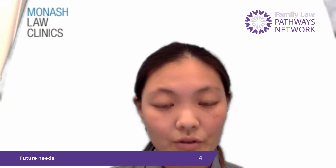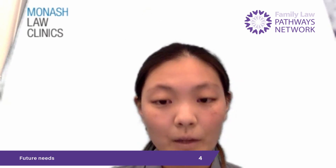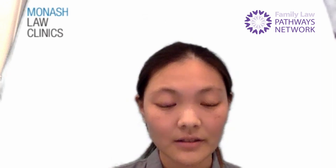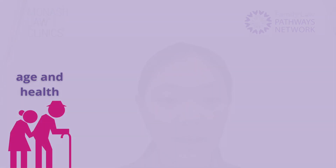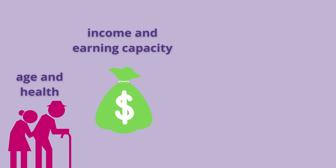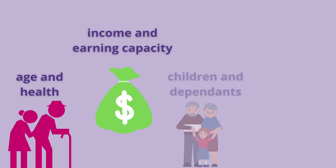The fourth step is looking at the future needs of the individuals to decide whether further adjustments are needed. Factors can include age and state of health, income, earning capacity including physical and mental capacity, and who has primary care of any children under 18 or dependents.